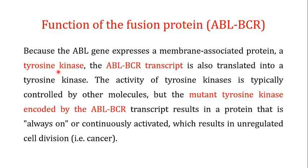In the normal form, after the ABL tyrosine kinase has performed its function, the cell cycle control system degrades it, eliminating its activity when it is no longer needed. But the tyrosine kinase encoded by the BCR-ABL transcript does not respond to the cell cycle control system and remains always on, resulting in unregulated cell division — cancer. If you found this video helpful, please subscribe, hit the like button, and share it with your friends.